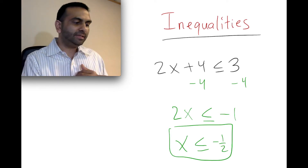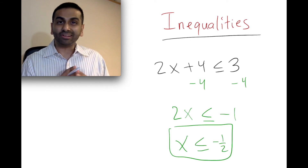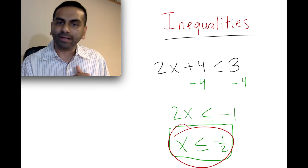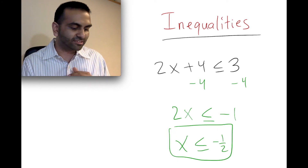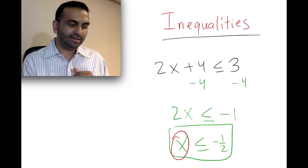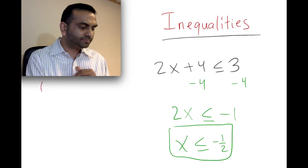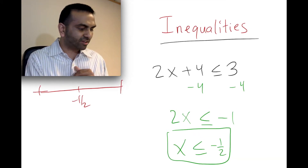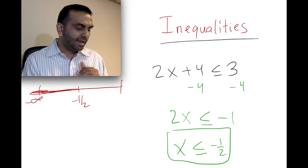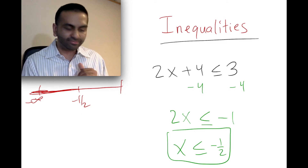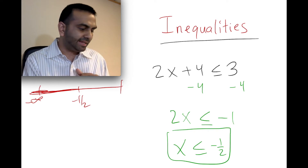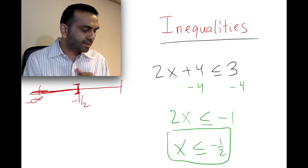Now, one comment here on notation. There's something called interval notation, which is just a different way to represent this inequality. This inequality is basically saying that x is any number less than or equal to negative one-half. If you imagine a number line, it's saying wherever negative one-half is, x is everything to the left of it, meaning it starts at negative infinity and goes all the way up to negative one-half. Since this inequality has an equal sign in it, that means it includes negative one-half.